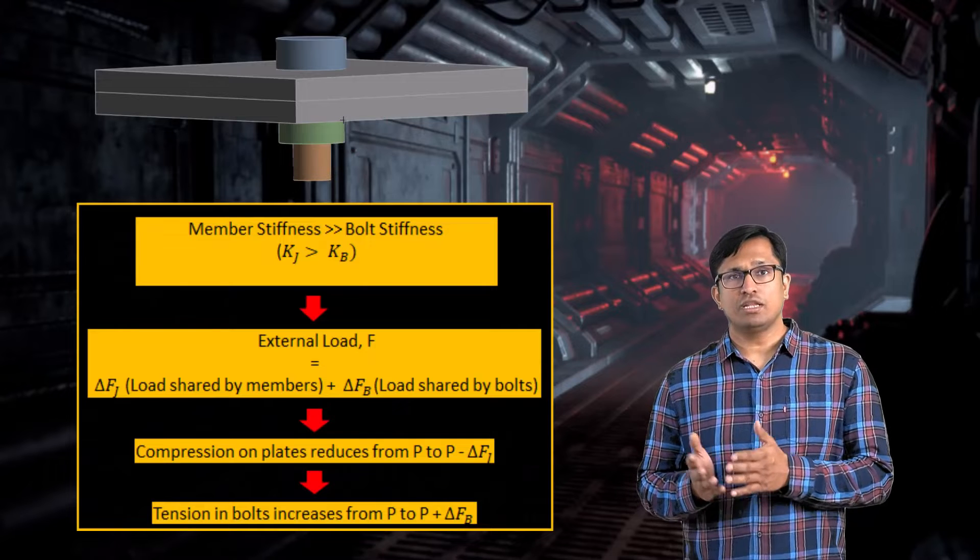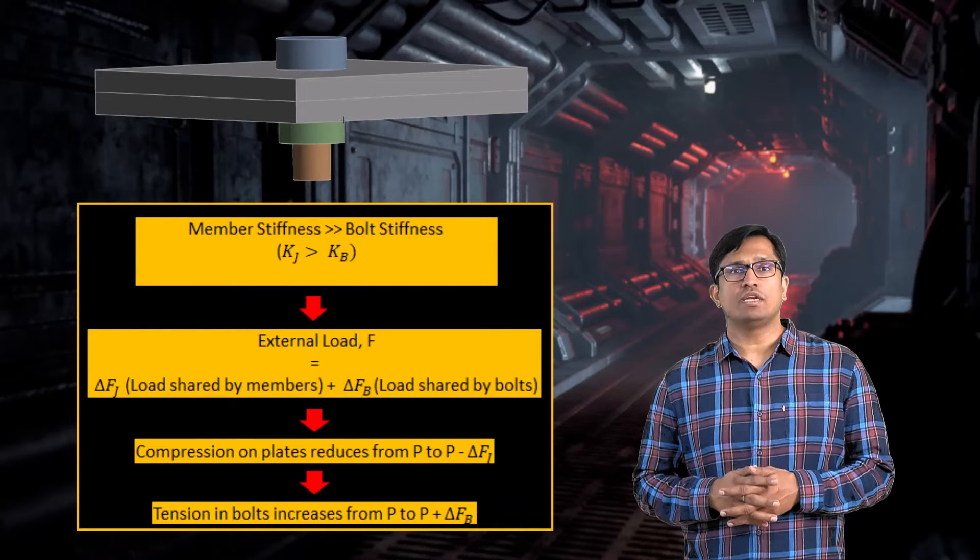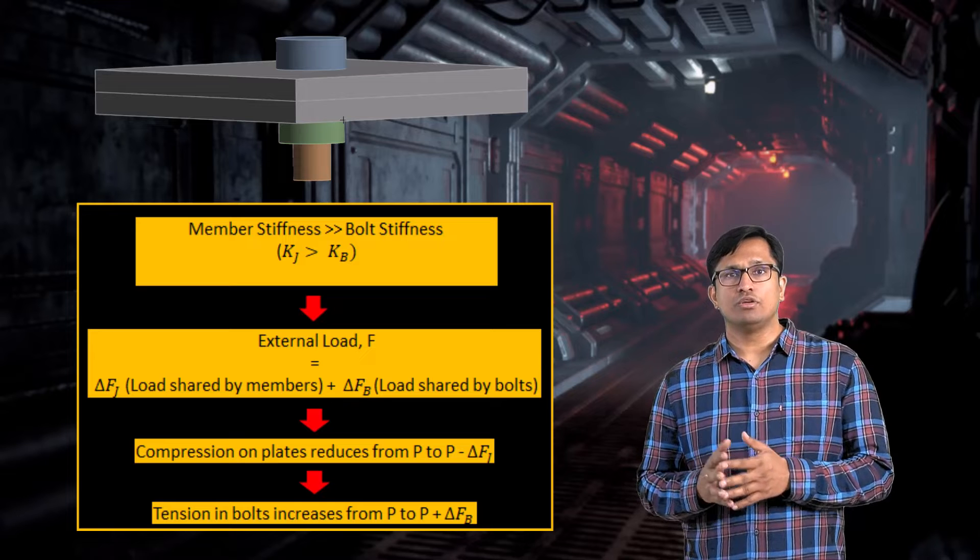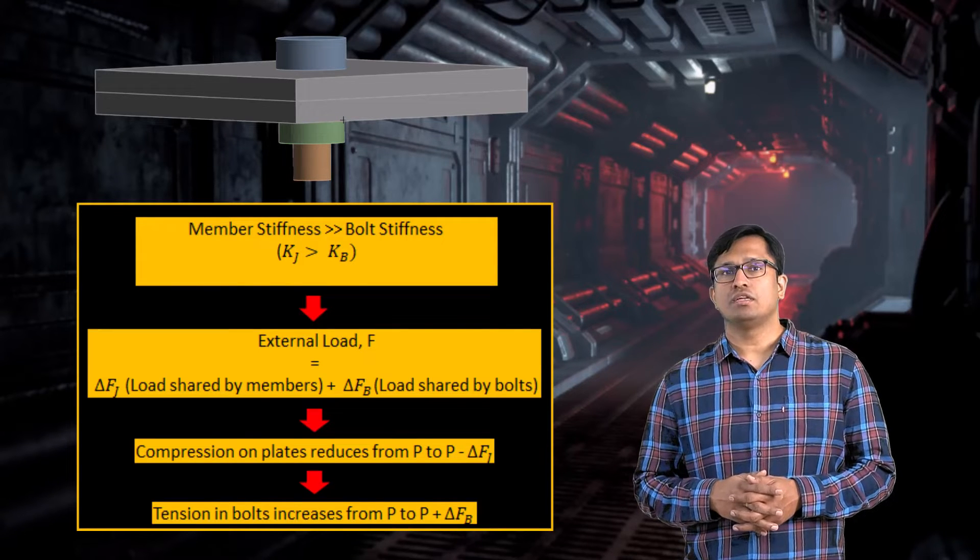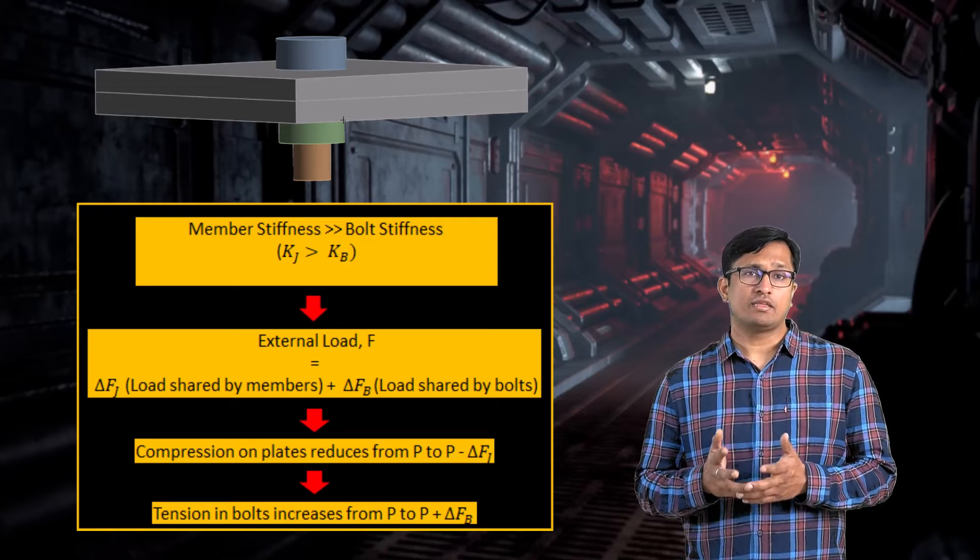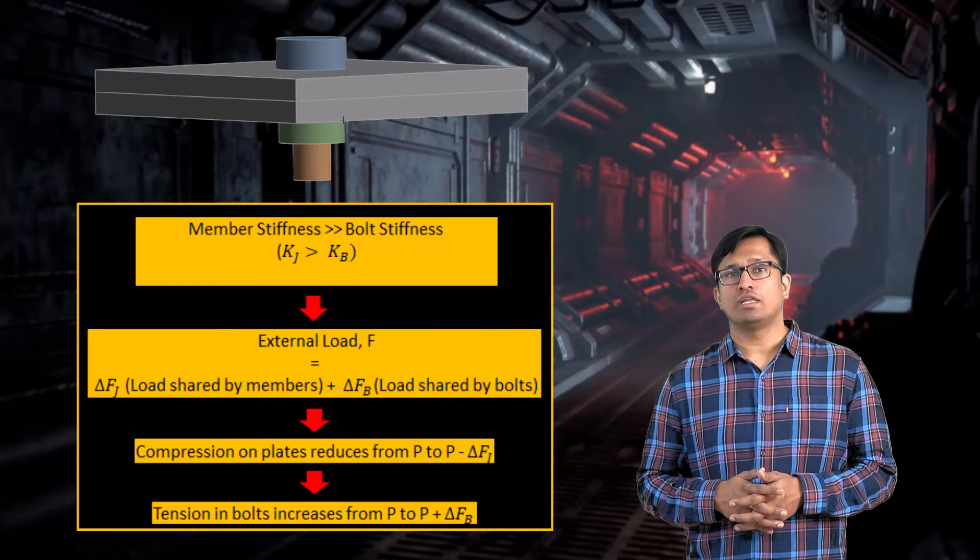When the stiffness of the clamped parts is much larger than the bolt stiffness, the majority of the external load goes into reducing the compression in the joint rather than increasing the tension in the bolt. Joint diagrams are developed to help visualize this behavior.